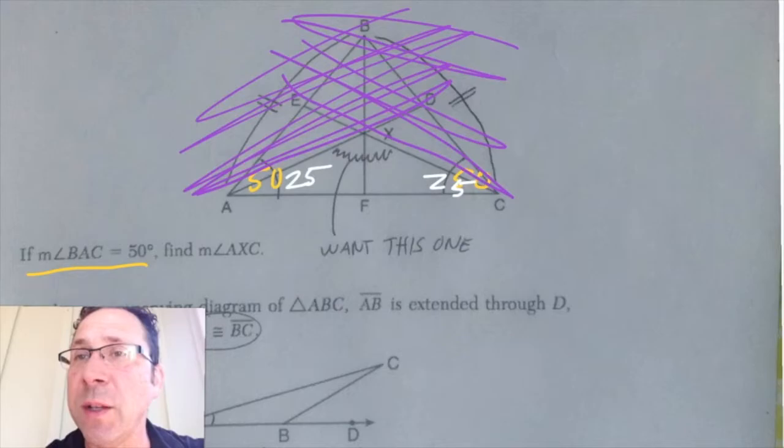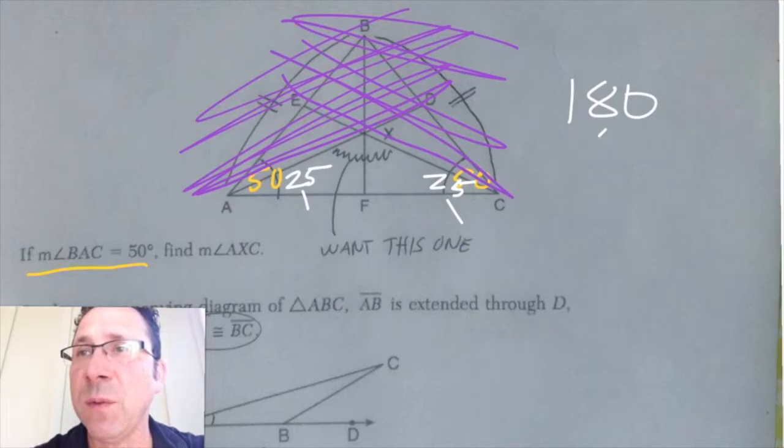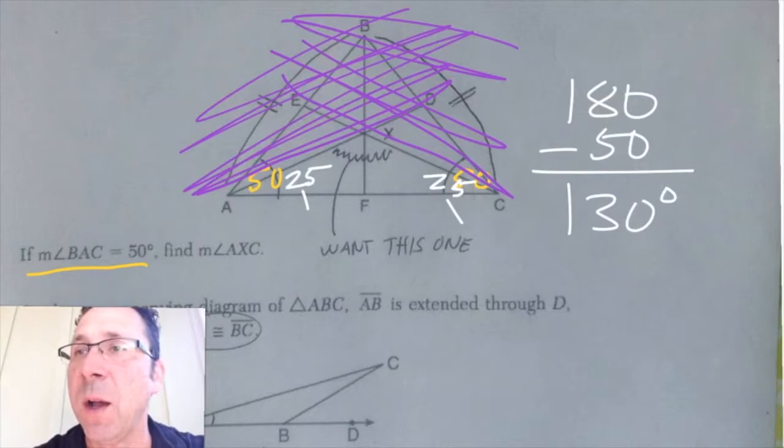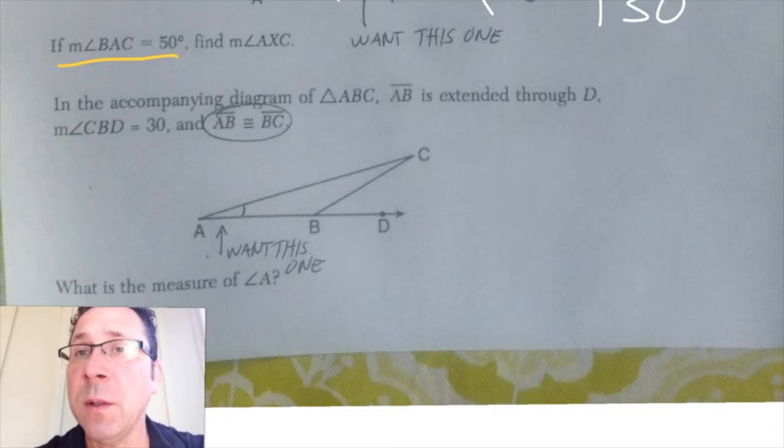So in a triangle there has to be 180 degrees altogether. I've got two 25s already. So that's 50 degrees so far. So subtracting would tell me that that missing angle would have to be 130 degrees.